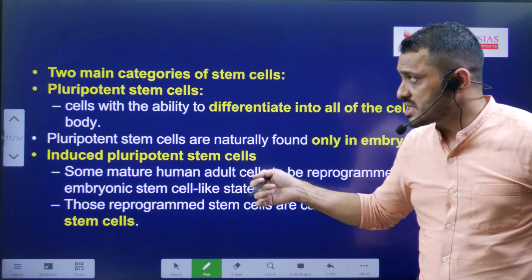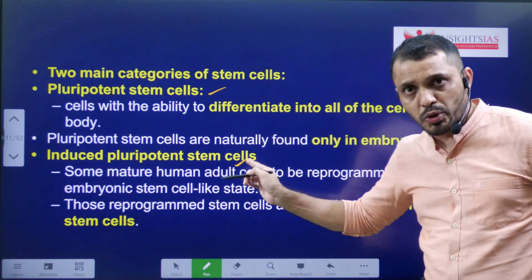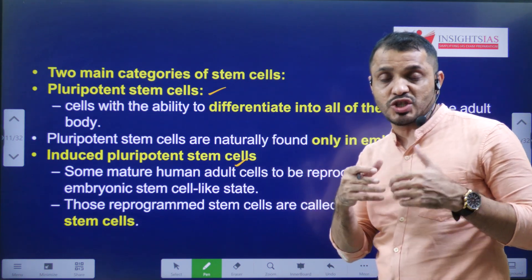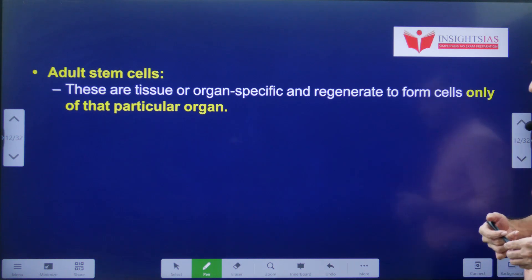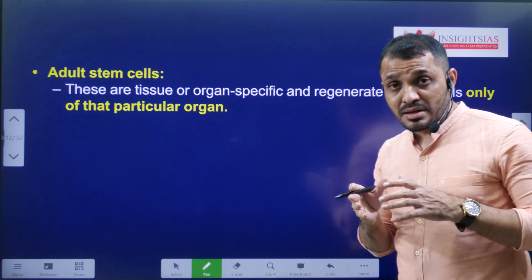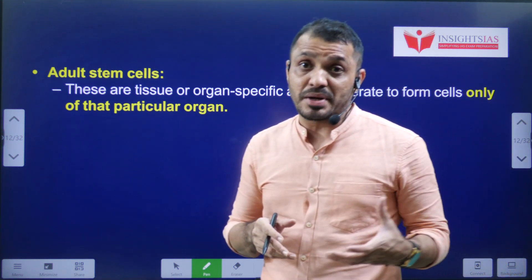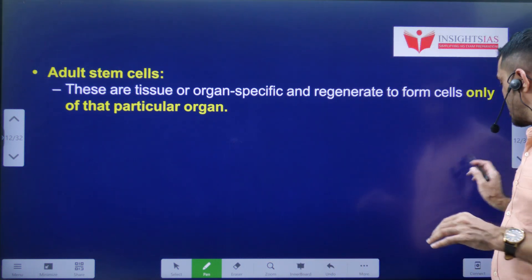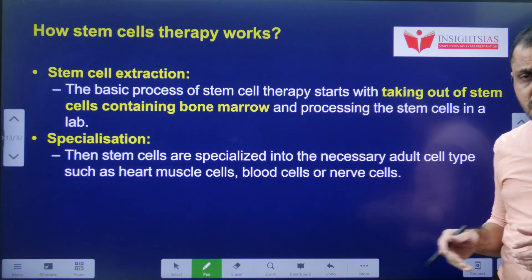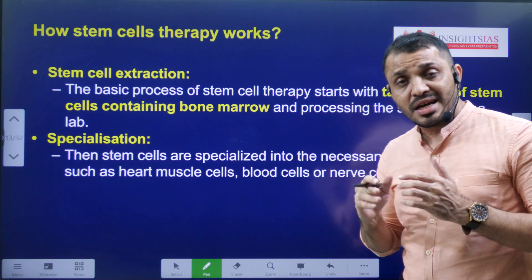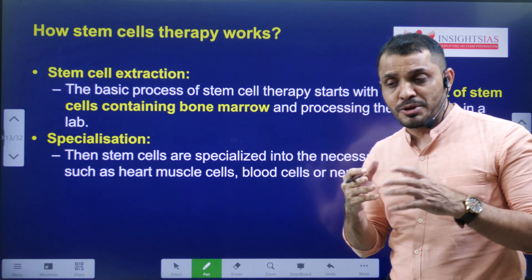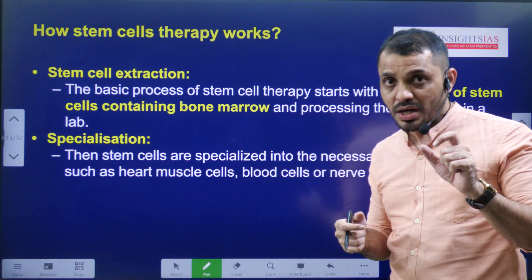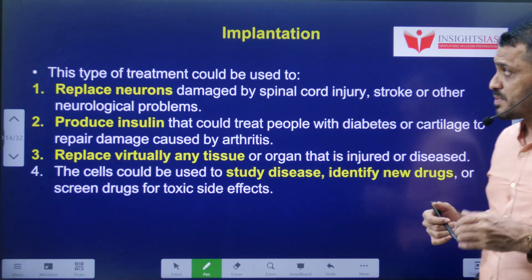There are two main categories of stem cells: pluripotent stem cells, which are naturally occurring, and induced pluripotent stem cells, which are adult stem cells converted into pluripotent cells. Based on the age at which they are present, stem cells are also classified as embryonic stem cells and adult stem cells. How does stem cell therapy work? Stem cells are extracted and then exposed to suitable conditions so that they differentiate into other specialized types of cells.